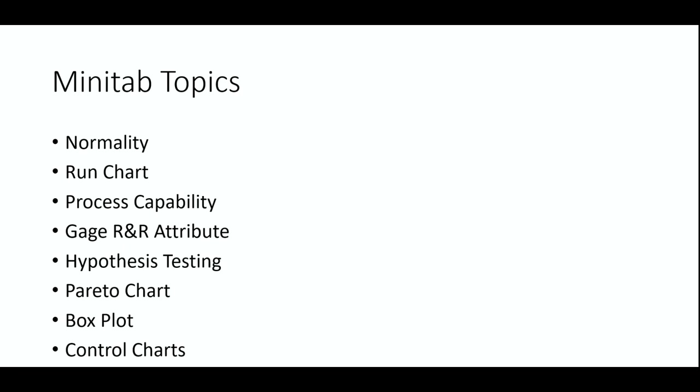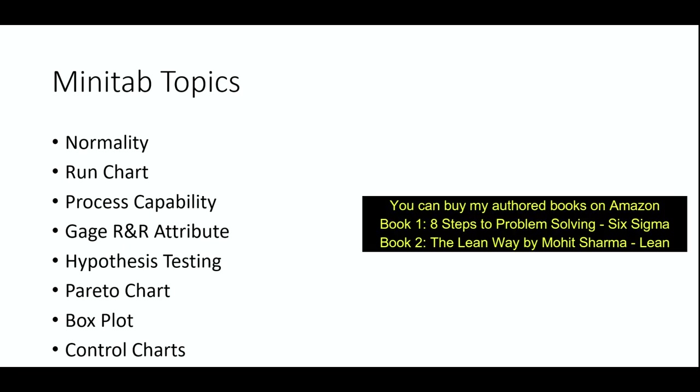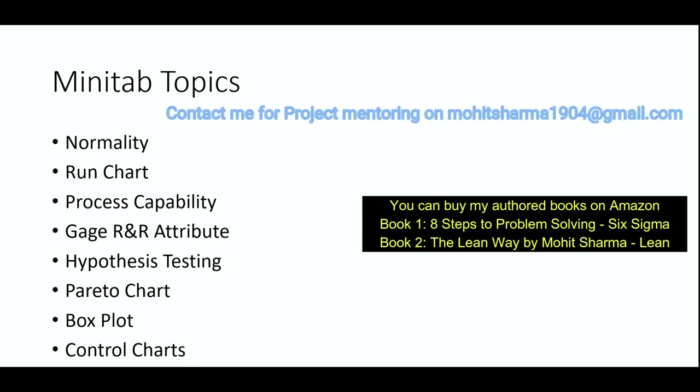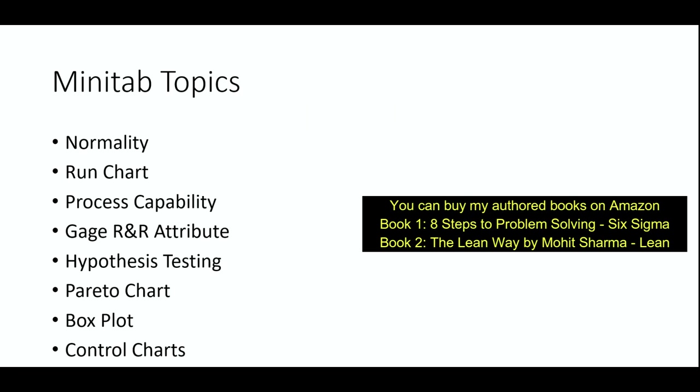Some of the topics that we are going to discuss today are normality chart, run chart, process capability, gauge R&R attribute, hypothesis testing — and there are so many types of hypothesis testing, we will try and cover the majority of them — Pareto chart, box plot, and control charts. So let's begin.